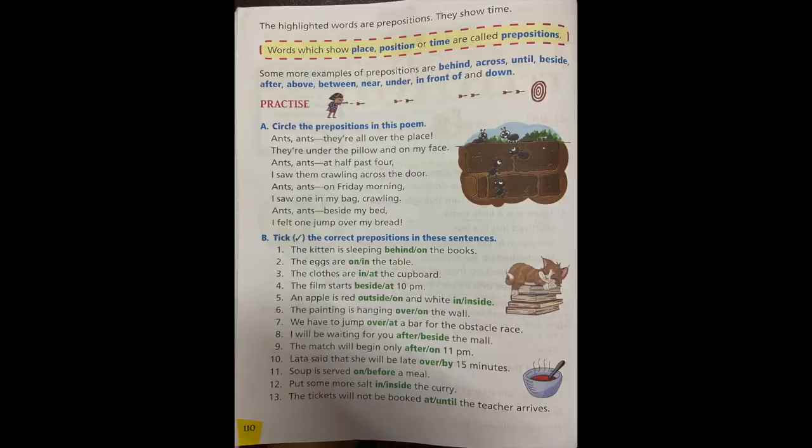Now look at section A: circle the prepositions in this poem. Ants, ants, ants, they are all over the place. Over is the preposition, circle it. They are under the pillow and on my face. Under and on, both are prepositions.